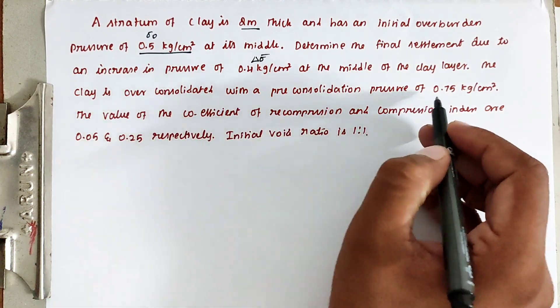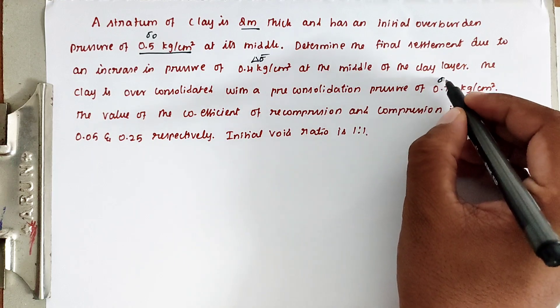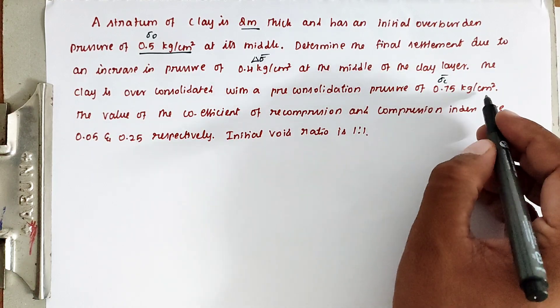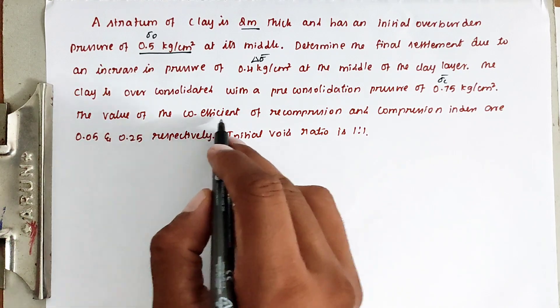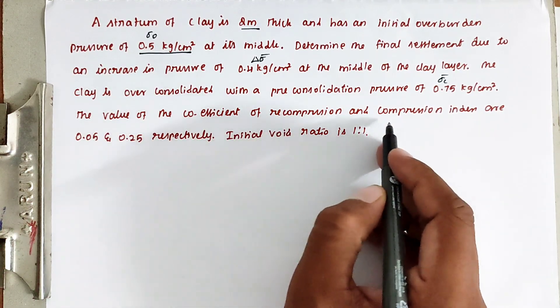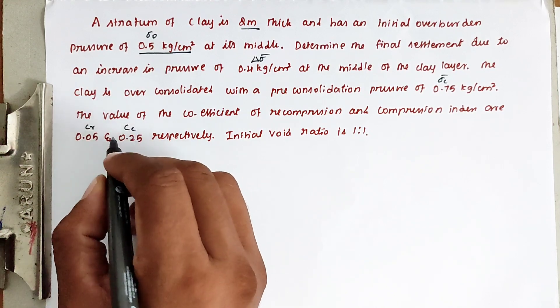With a pre-consolidation pressure of 0.75, so that is sigma c bar equals 0.75 kg per centimeter square. Then the value of coefficient of recompression and compression index, that is Cr and Cc values.